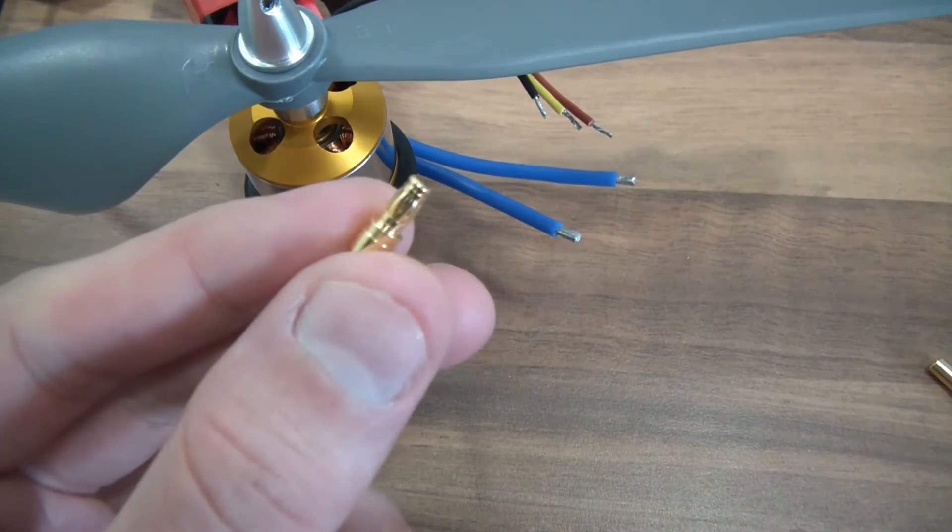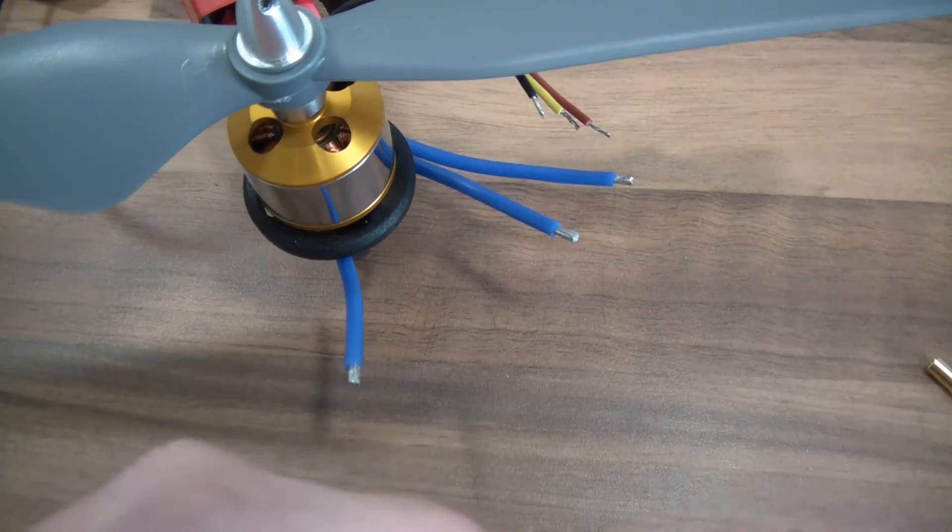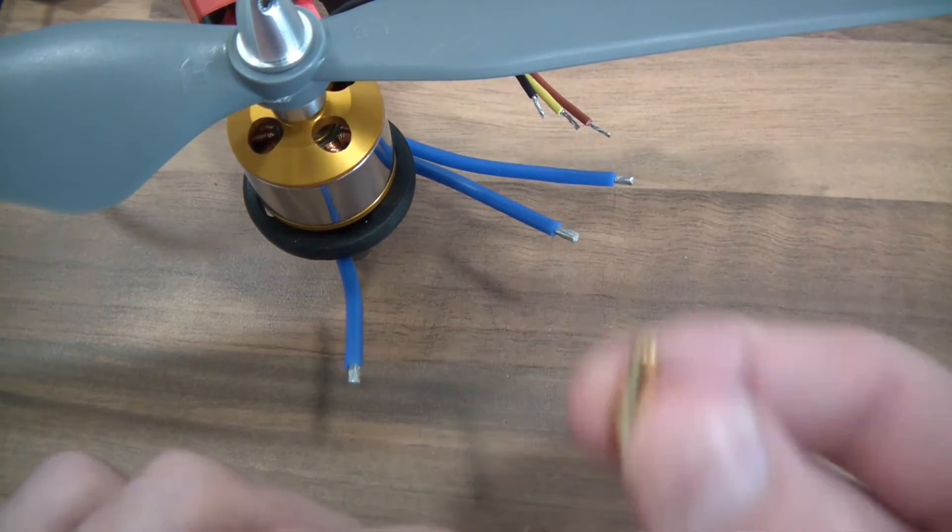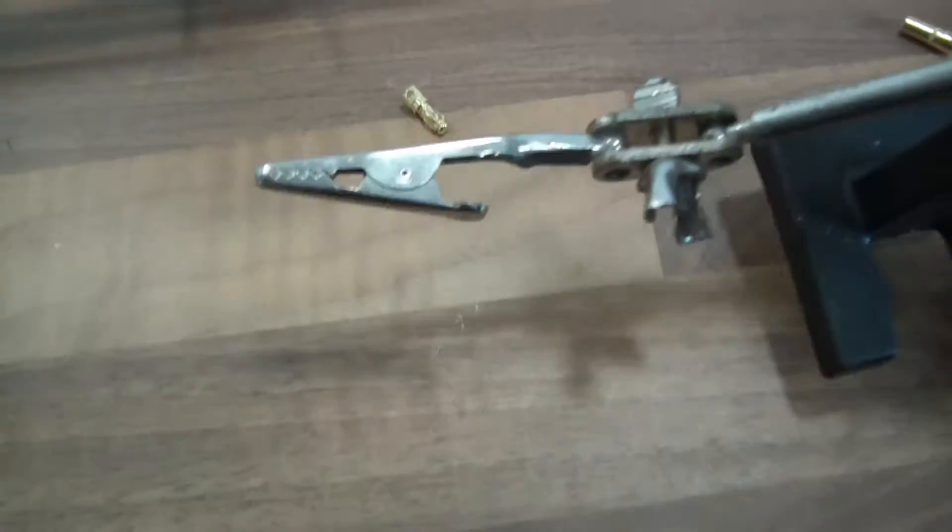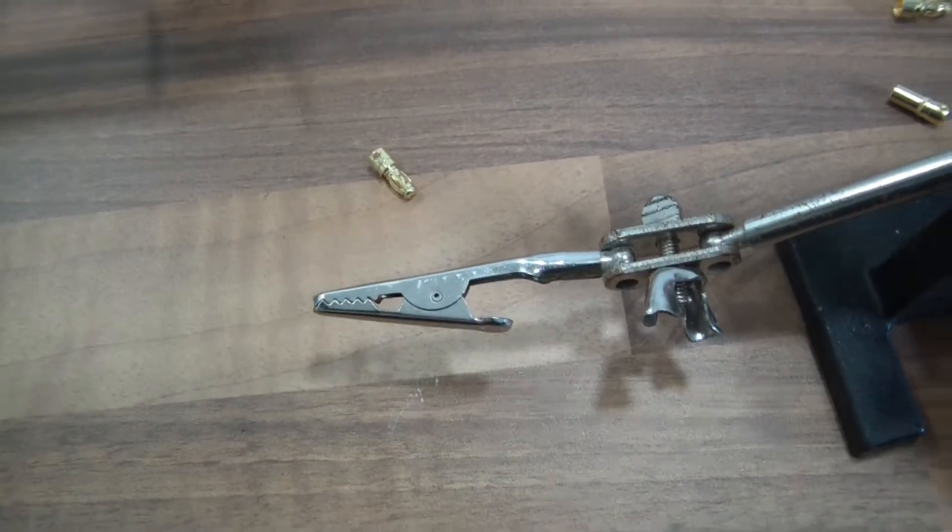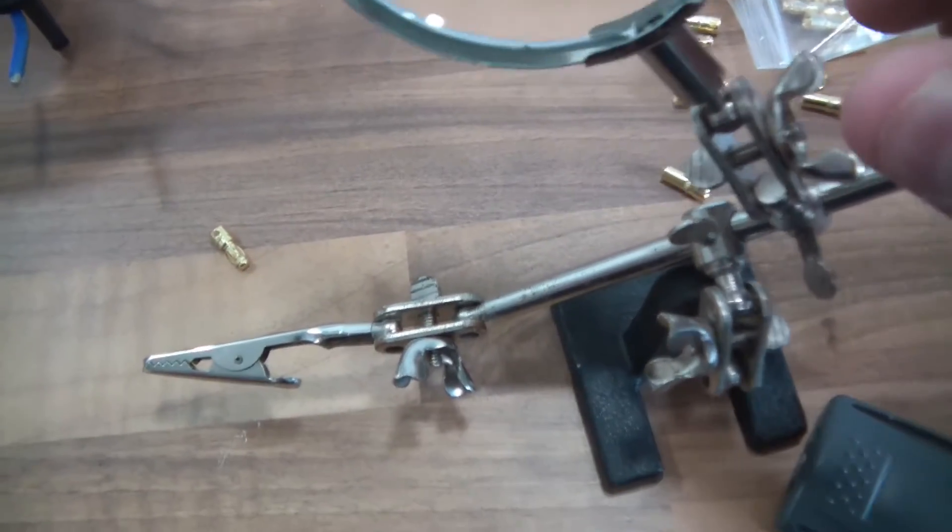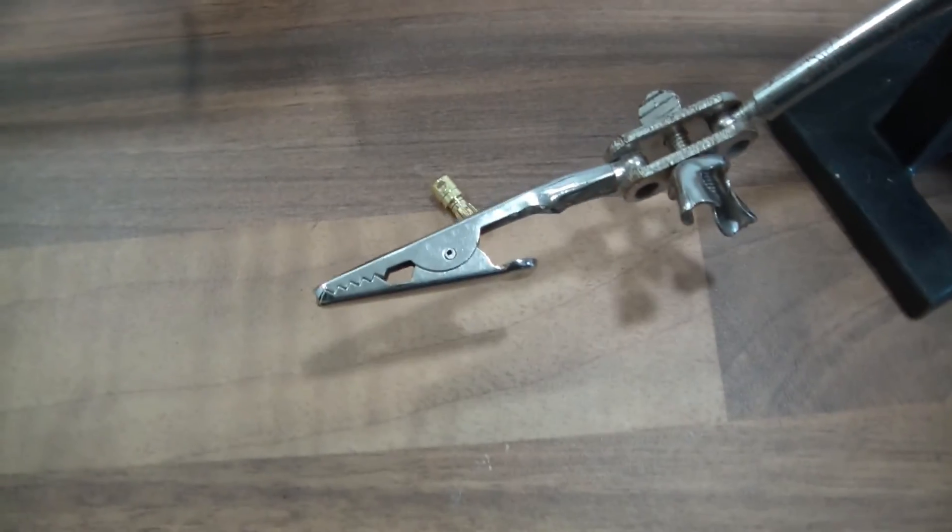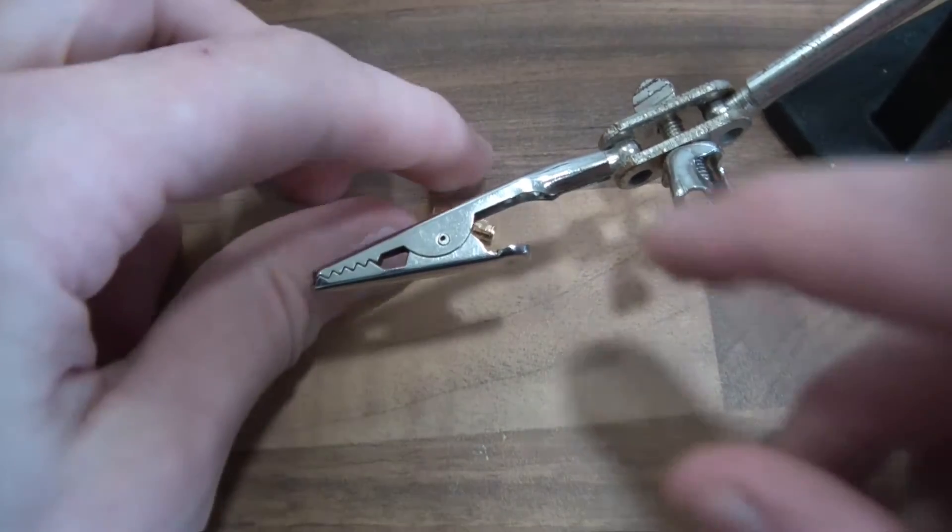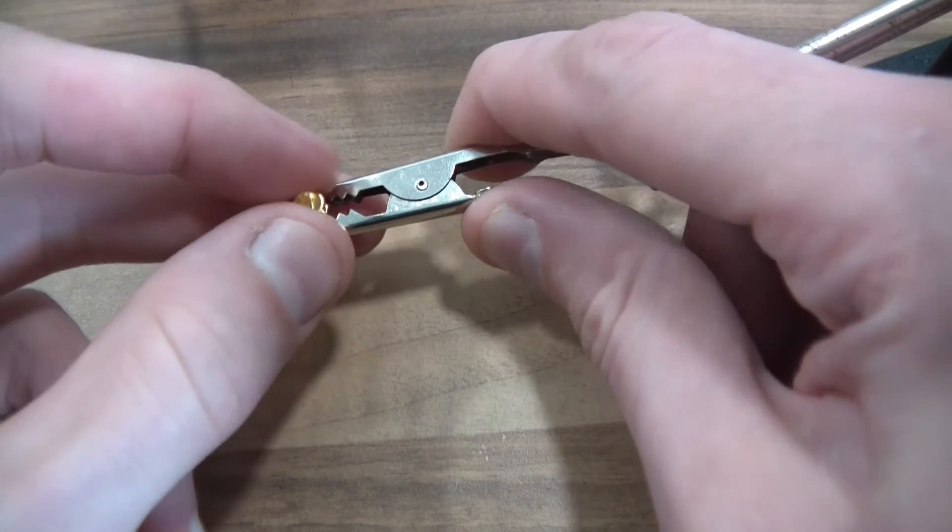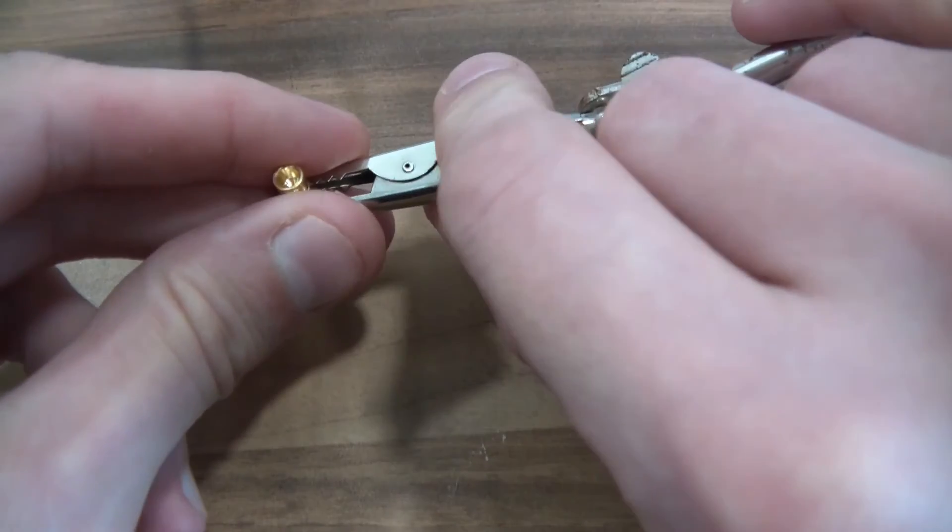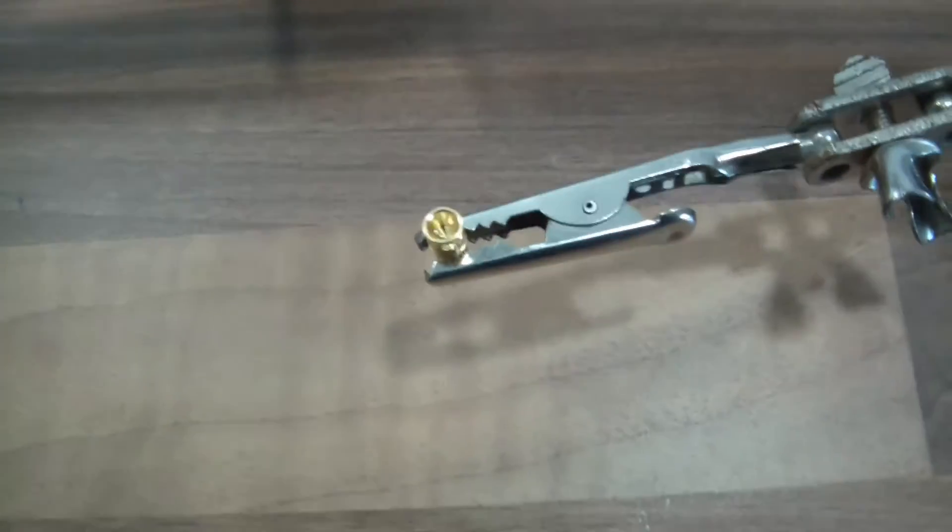So the male one, which is this one of course, is going to go onto the motor, and the female one is going to go onto the ESC. So this is how to do it. I'm going to get this little thing here - I think it's called helping hands or something like that. I'm going to get it to hold the male connector like that, just like that.